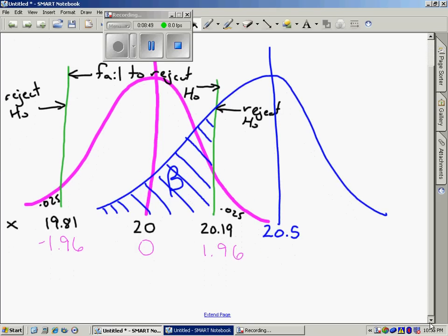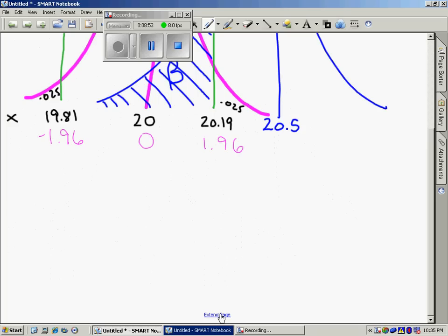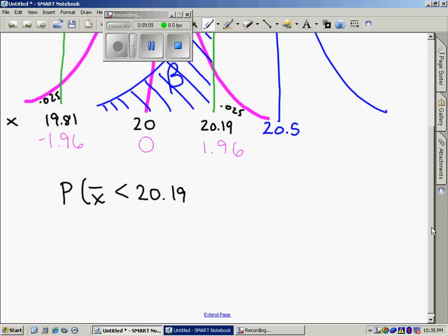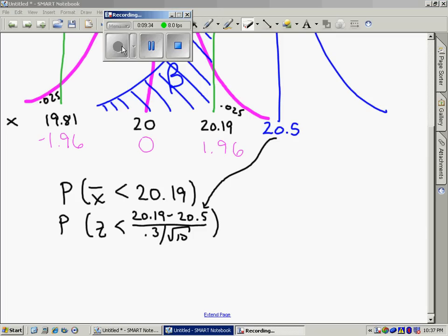Now I have to calculate the area of beta. Let me extend my screen and what I want to know is find the probability that I would get an X bar less than 20.19. Notice that my fence was at 20.19, so this blue region is the area I'm looking for, that's the area less than 20.19. Now I need to standardize it. Z is less than 20.19 minus mu. What's mu? Remember the statistical all-knowing God just told you mu was 20.5, so stick 20.5 in there. Standard deviation stays the same, it's 0.3 divided by the square root of 10.